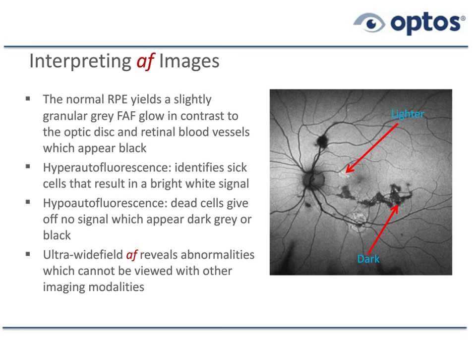Ultrawide field autofluorescence reveals abnormalities which can't be viewed with other imaging modalities. You can dilate a patient to eight millimeters, use a binocular indirect ophthalmoscope, and be very skilled with it, but you're not going to see abnormalities at the level of autofluorescence that we can see with, say, a Daytona system. Many of these findings are invisible even to indirect ophthalmoscopy through a dilated pupil.